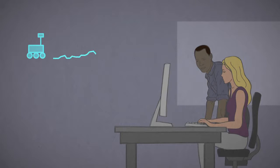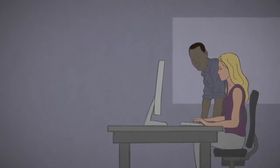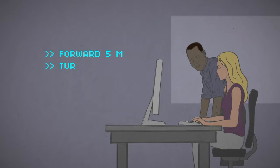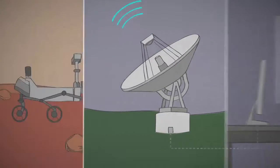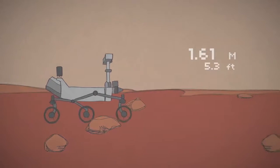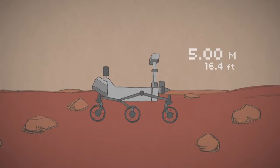Depending on how tricky the terrain is, rover drivers have two options. They can send a string of specific commands like drive forward 5 meters, then turn right 90 degrees. The rover turns its wheels enough times to add up to 5 meters, and then turns in place.